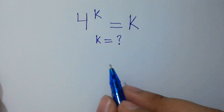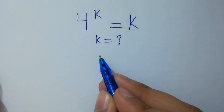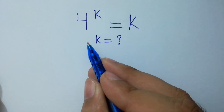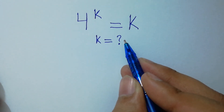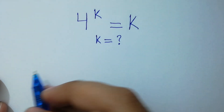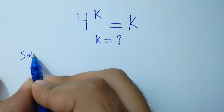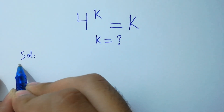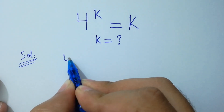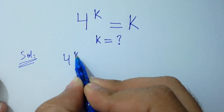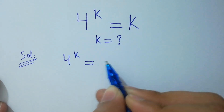Hello friends. Find the value of k if 4 to the power k equals k. Let's solve it. We have 4 to the power k equal to k.